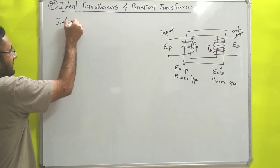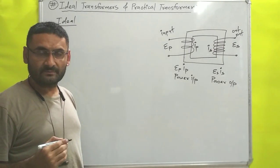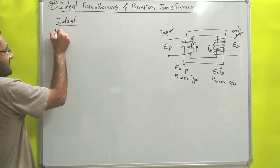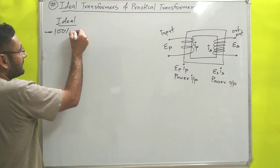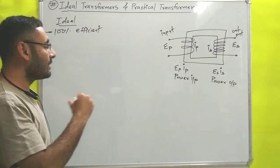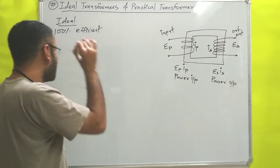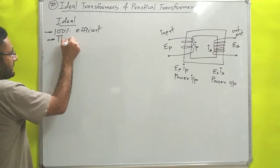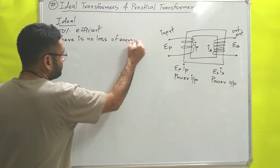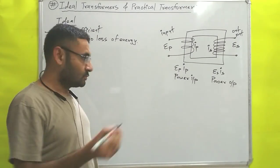Now we'll discuss about the ideal transformer. An ideal transformer is an imaginary transformer — it is not practically possible — and its efficiency is 100%. That means ideal transformers are 100% efficient. The reason is simple: in an ideal transformer there is no loss of energy.